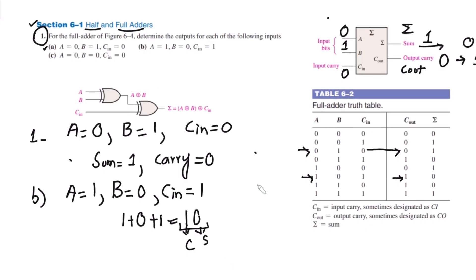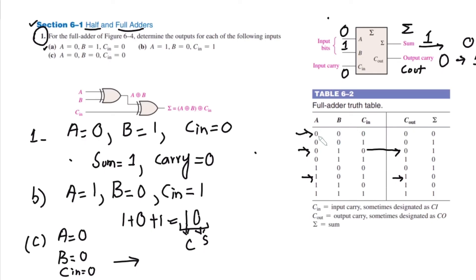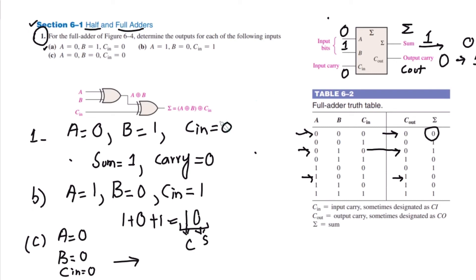For part C: A = 0, B = 0, and carry input = 0. This corresponds to the first row in the table, where the output carry is 0 and the sum is also 0. These are the different parts of question 1 which I have solved, and all concepts related to the full adder are now covered. If you have any questions, ask in the comment box — take care and I'll see you with more interesting stuff in the upcoming video.